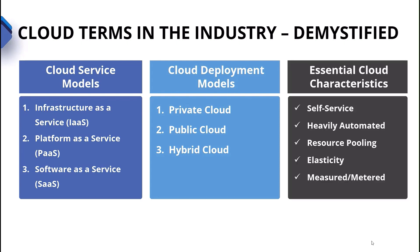Last but not least, we have essential cloud characteristics — the key things that mean we can say we are providing cloud services. There are really five of them. Number one, self-service: the ability to go to a portal and request that service for ourselves. We don't have to put a ticket in with IT and then wait for networking, storage, and everybody else to get involved. We have self-service through a portal.